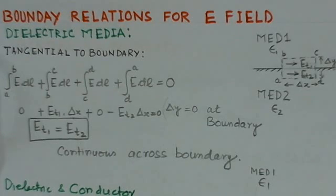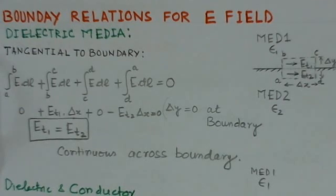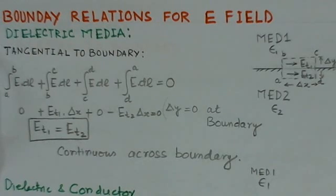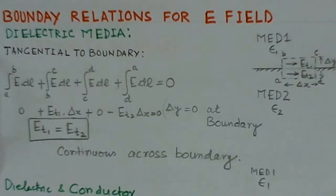We will divide this video into three parts. The first part consists of the complete electric and magnetic field boundary conditions. The second part will consist of two GATE problems: one for 2003 and another for 2006, both based on the boundary conditions for the electric field. The third part would consist of a problem from 2011, which is based on the boundary conditions for the magnetic field.